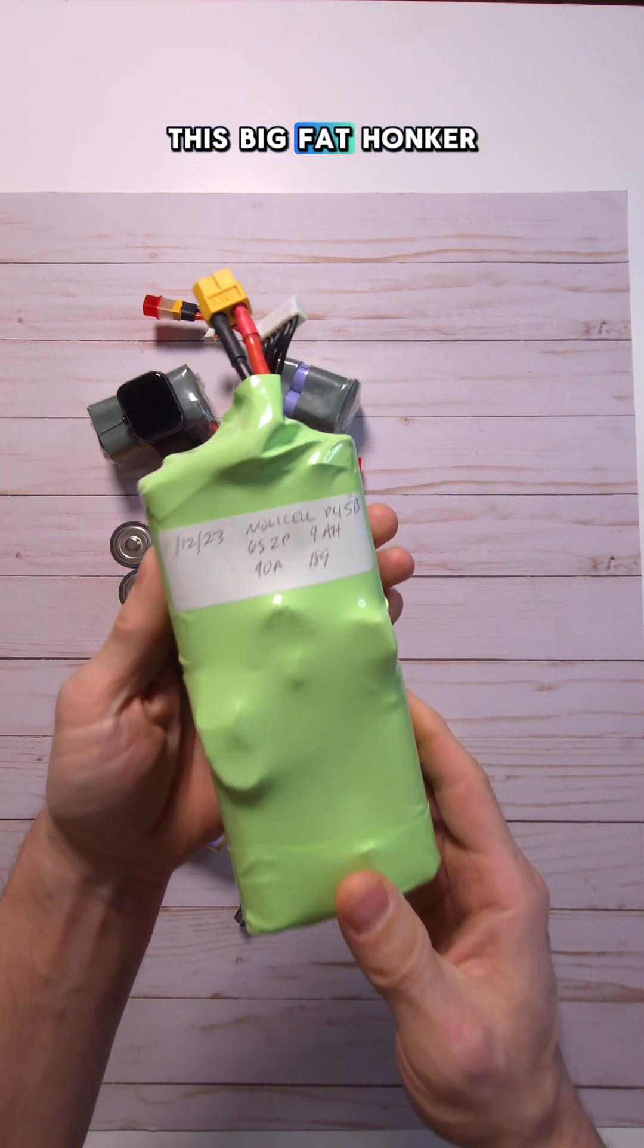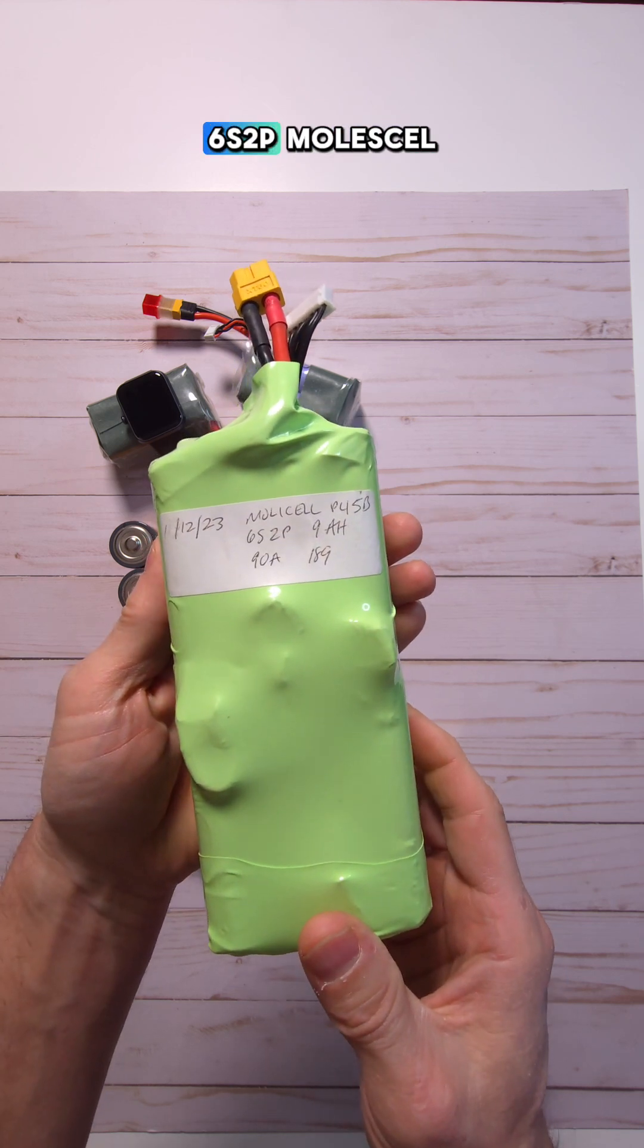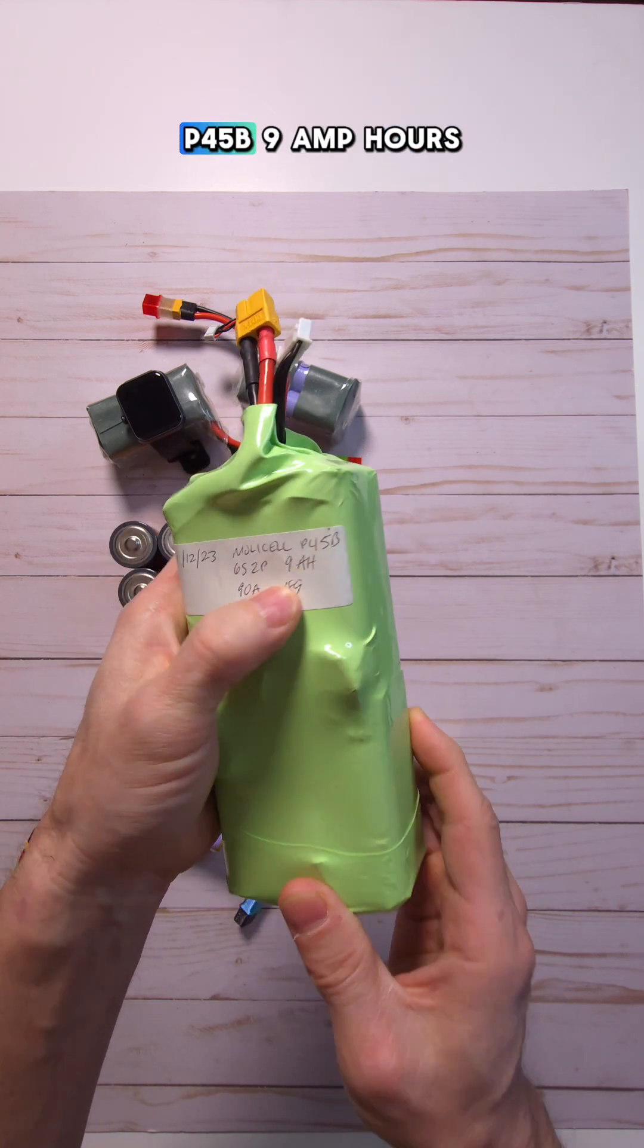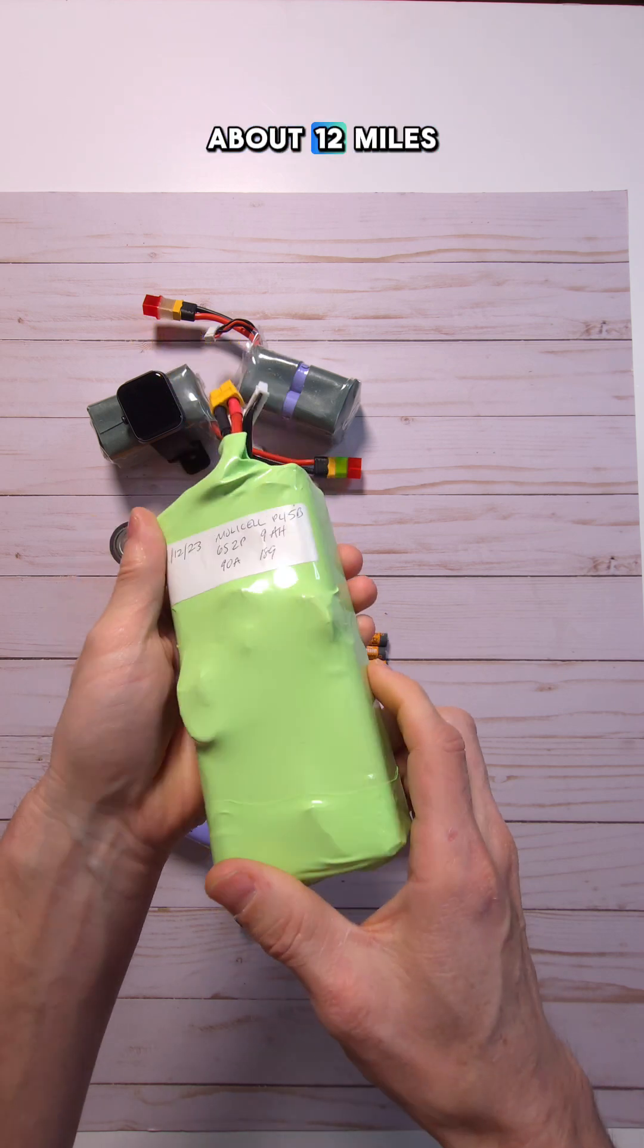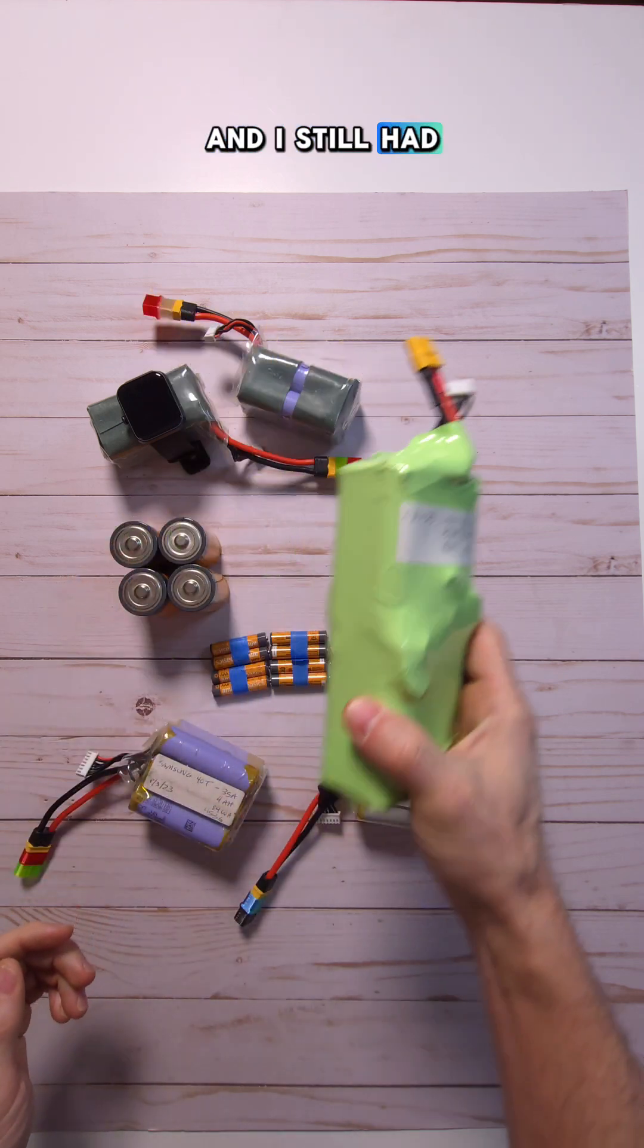And my favorite, this big fat honker over here is a 6S2P Molisele P45B, 9 amp hours. The longest run I've gotten on this is about 12 miles round trip, and I still had more juice in the pack.